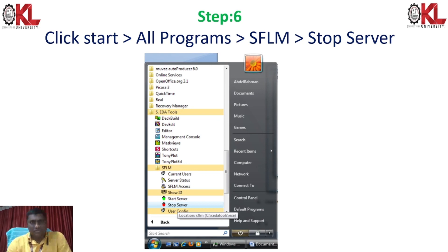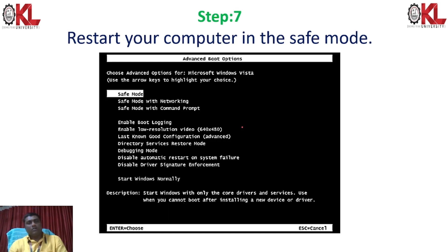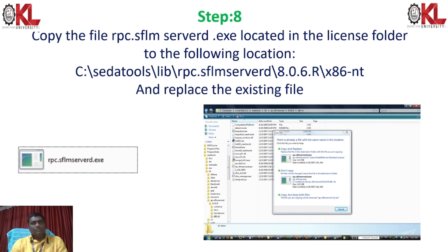After exiting, go to Start, then All Programs, then SFLM under the Silvaco folder. Go to Stop Server and click it. Your computer will automatically restart in safe mode — click Enter. After the reboot, copy the files rpc.sflm and the server license file, then replace the existing file in the C drive at the specified location.